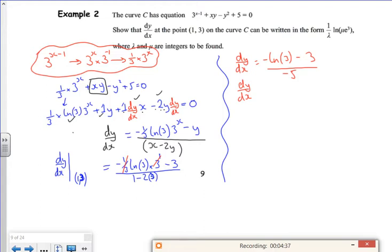Timesing three by minus one, I've got log(3) + 3 all over 5.